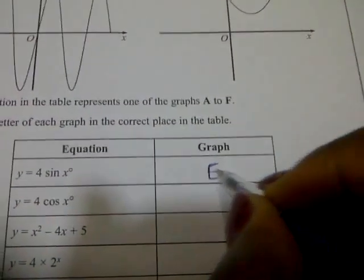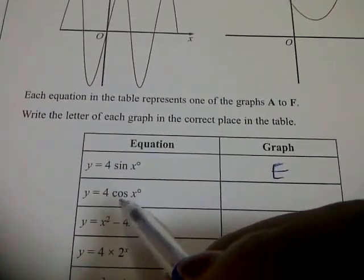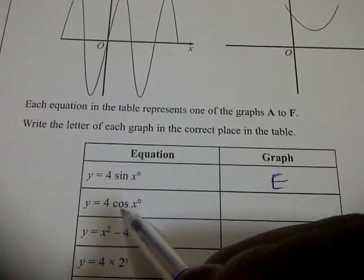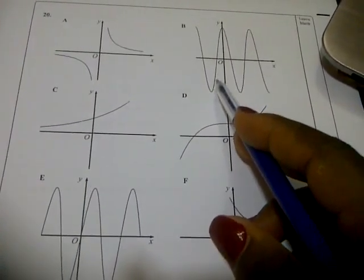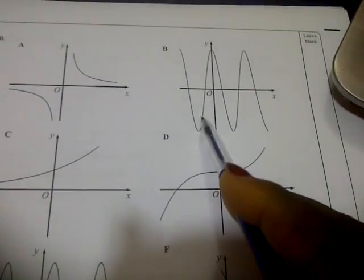The first one is E. So the second one is y equals 4 cos x degrees. Now the second one that is sinusoidal, it has to be the answer, and that is B.